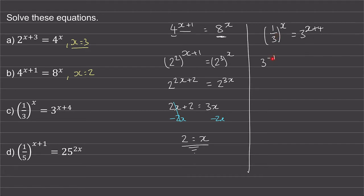Don't confuse this 1 with this 1 — the 1 over means the negative power. Now we're raising this to the power of x, and this is equal to 3 to the power of x plus 4. So now we can use the power rule. We have 3 to the power of negative x is equal to 3 to the power of x plus 4.